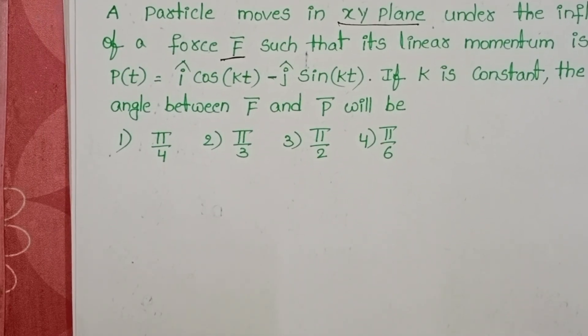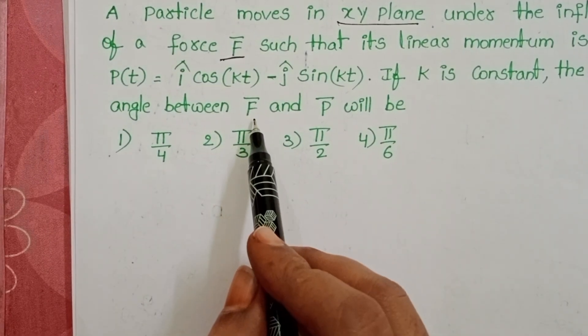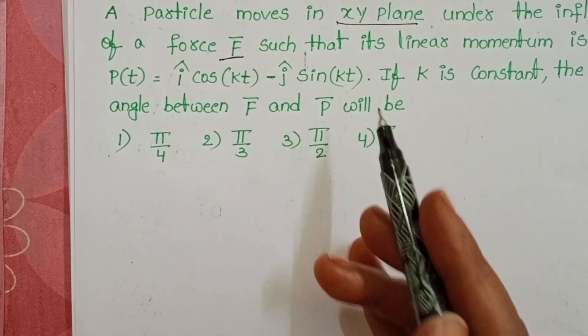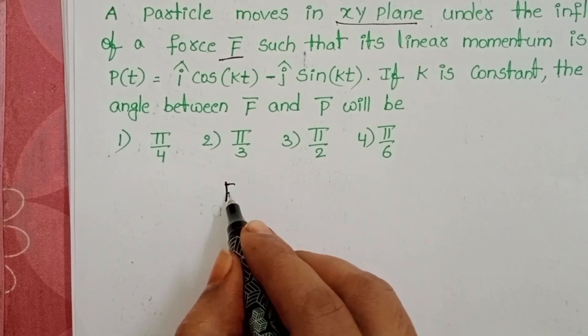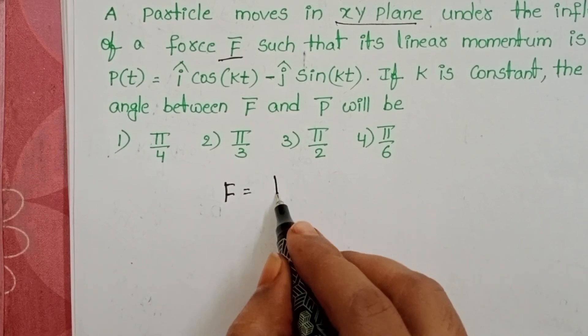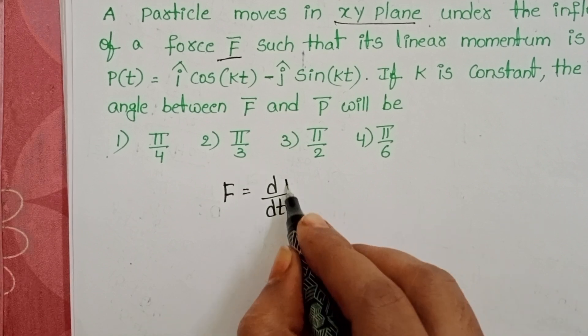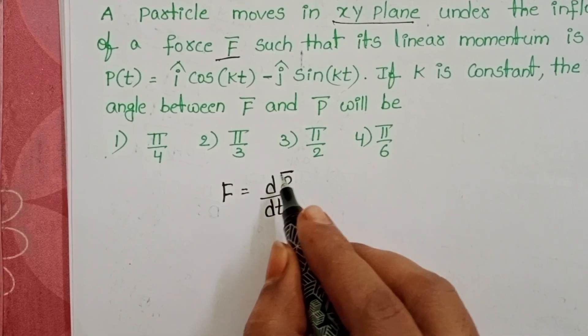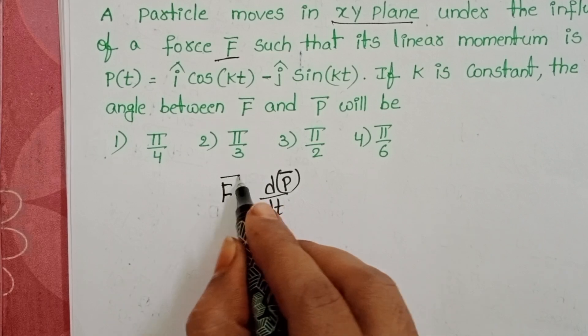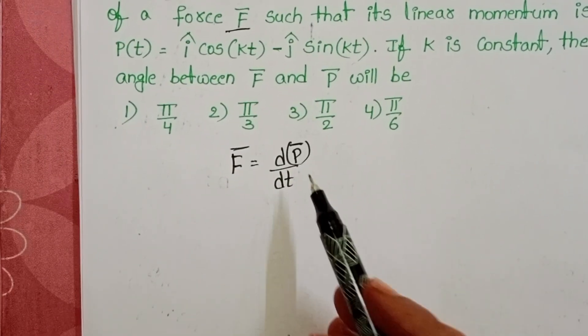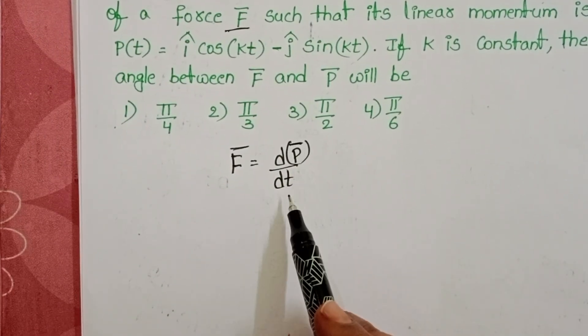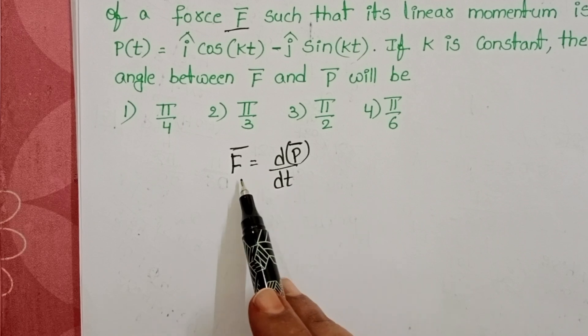In this question, we have to find out the angle between force and momentum vectors. We know force is the rate of change of momentum: F equals D by DT of P bar, where P bar is the given momentum vector. So, differentiate given momentum vector with respect to time, then it gives the force.